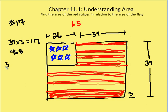So we multiply 3 stripes times the width of 3 times the length of 65, and we get 585.